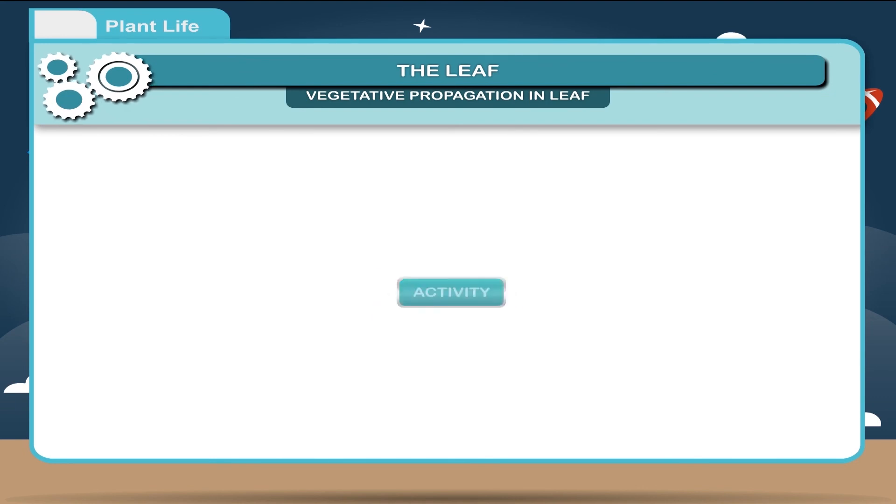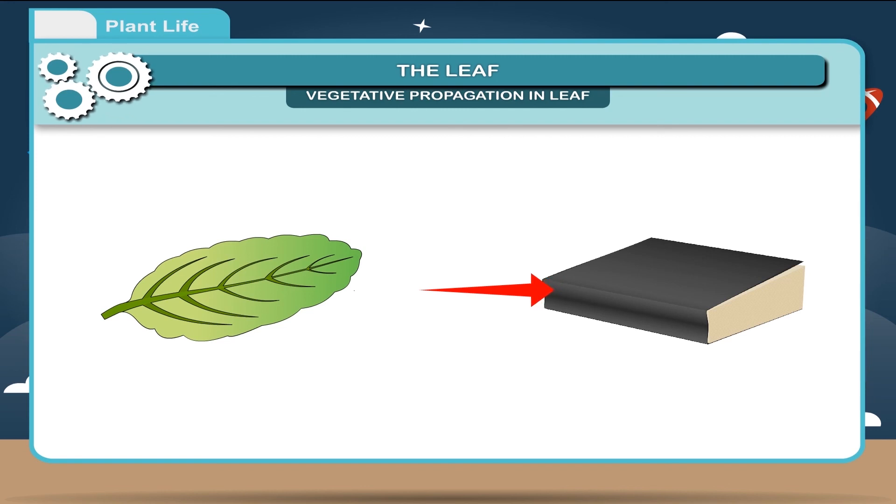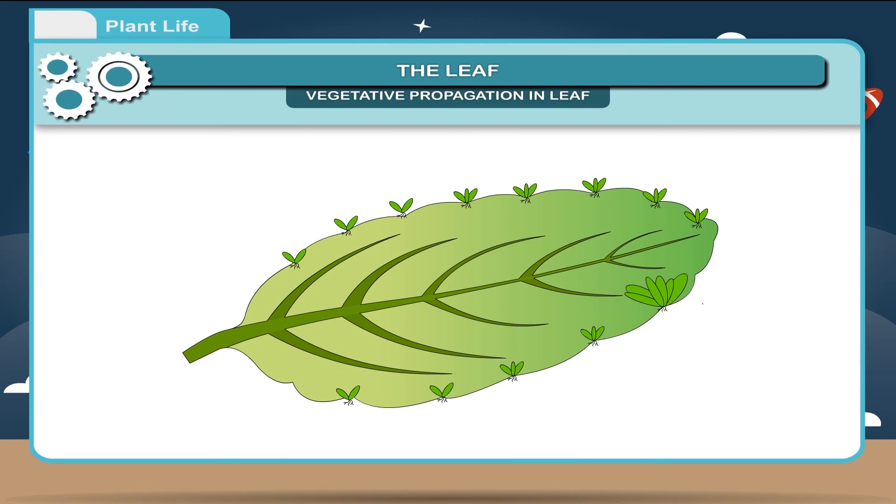Activity. Pluck a bryophyllum leaf and place it in between the pages of a book. If you see it after 2-3 days, you will find several new plants growing from the buds all along the edges.